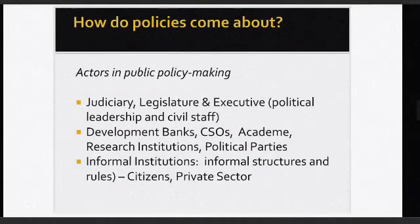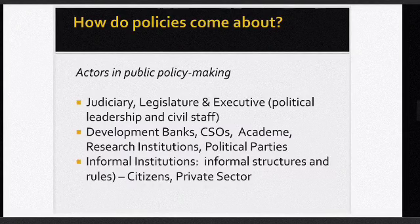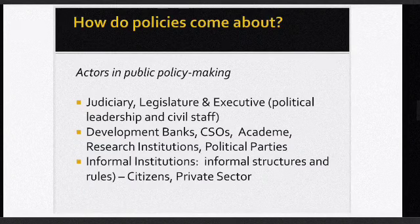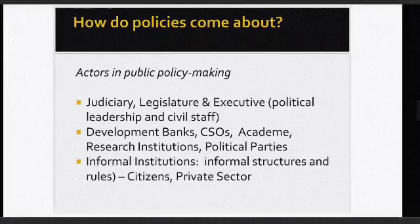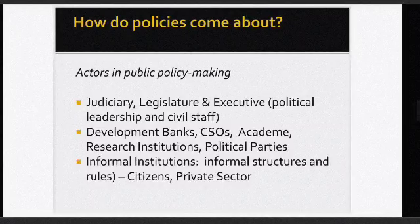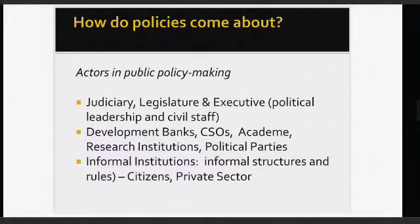Now how do policies come about? Let's look at the actors in public policy making. We have the judiciary, legislature, and executive branches, political leadership and civil staff, development banks, CSOs, academic institutions, and political parties. Development banks are related to finance; CSOs and academic institutions handle research and evaluation. We also have informal institutions, informal structures and rules, citizens, and the private sector.